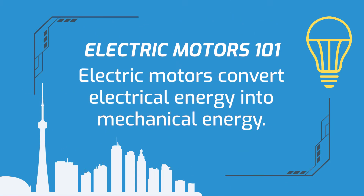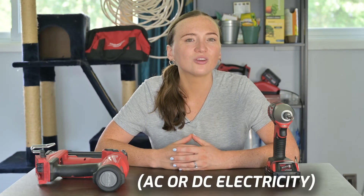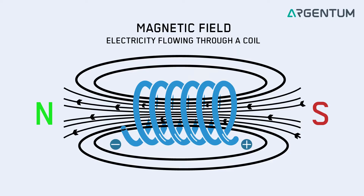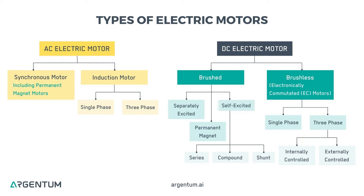To start with the basics, an electric motor is used to convert electrical energy into mechanical energy. In practice, this means that the electrical current created by the type of electricity being used produces a rotating magnetic field that rotates the armature of a motor. There are two types of electricity in general: alternating current and direct current. That's why electric motors use one or the other, and why the two major types of electric motors are either AC or DC.